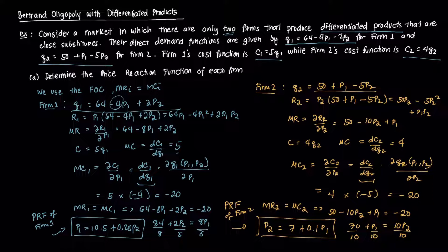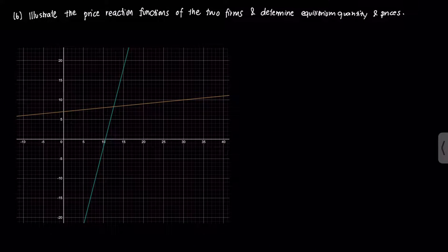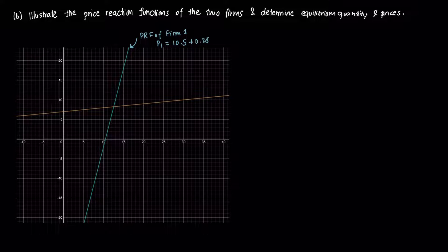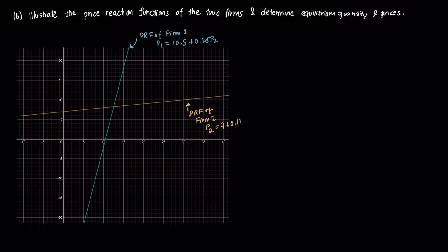We now have both price reaction functions: firm 1's PRF is P1 = 10.5 + 0.25P2, and firm 2's PRF is P2 = 7 + 0.1P1. These are linear functions and can be graphed accordingly. To find the equilibrium price, we solve simultaneously by substituting one PRF into the other.